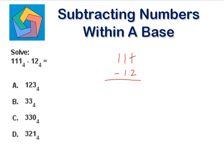So this becomes 5. Sorry, not 7—5, because the base is 4 here. So 1 plus 4 is 5, and this becomes 0. 5 minus 2 is 3.